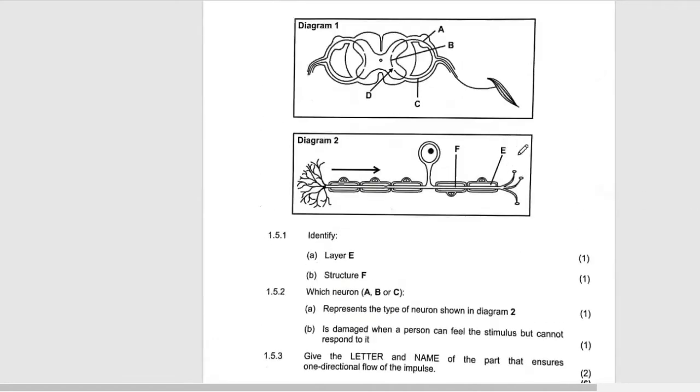This one becomes the myelin sheath, and this one shows the direction of the neuron. This is the direction of the impulse there, and it's the cell body. The part which takes the impulse away from the cell body is the axon, so this side becomes the dendrite.